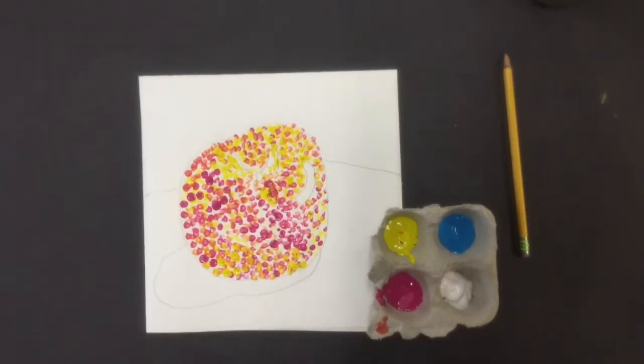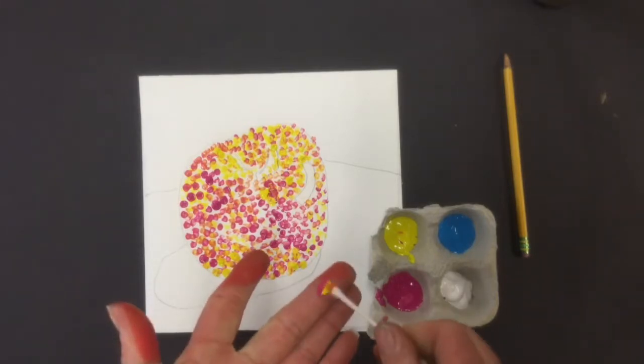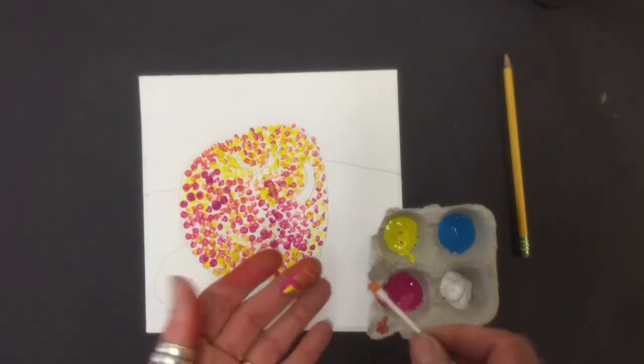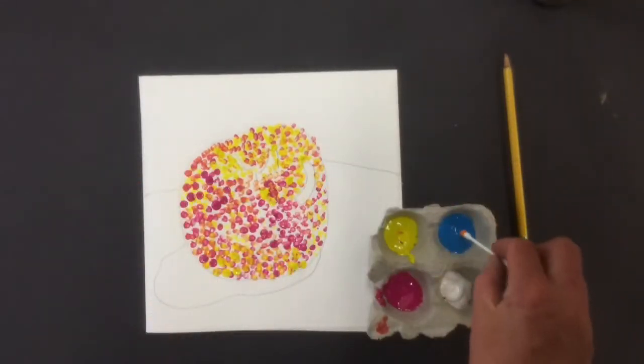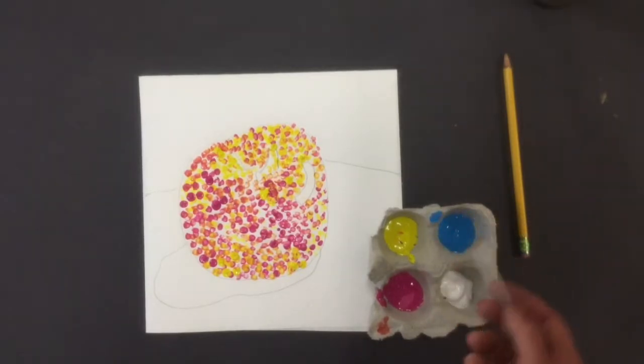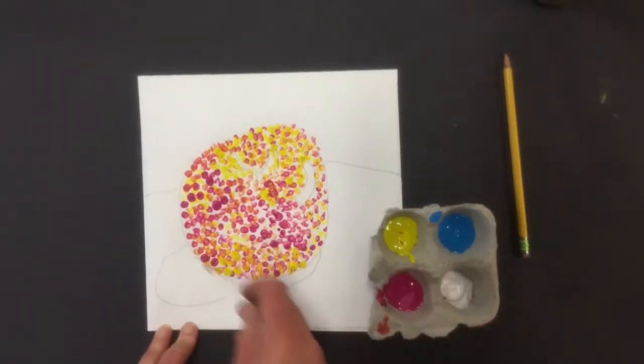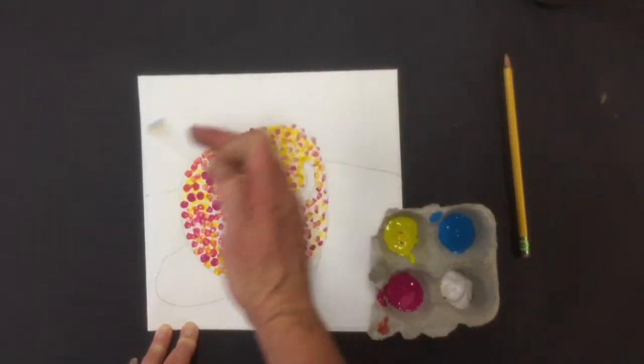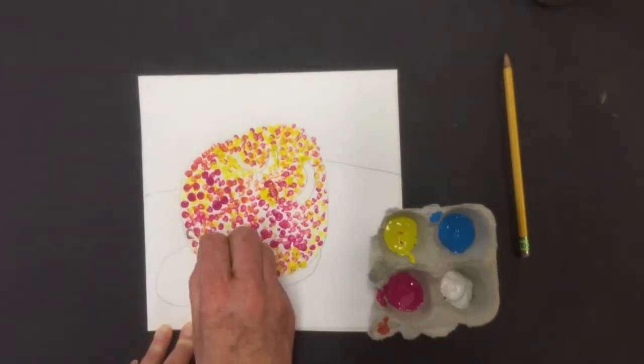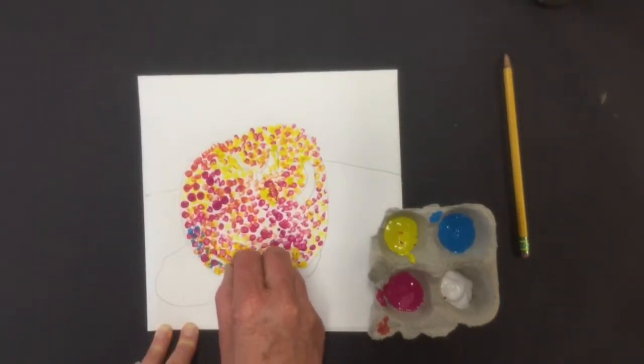So again, I'm just going to kind of wipe my q-tip off, and I just rub the paint on my hands. We can wash our hands later. Dip it in the blue. I don't want too much blue. Blue is really powerful. So I'm going to dab it off there. And now down here on the darker part where if this is the light, the apple is curving away from the light, it's going to be darker. So I'm going to put some blue in here.